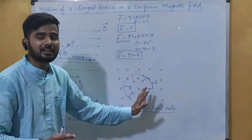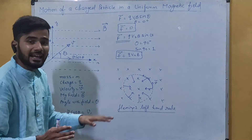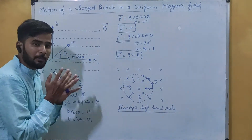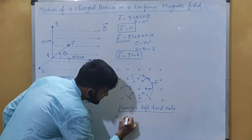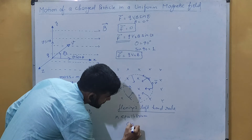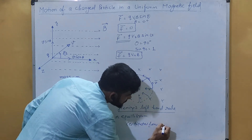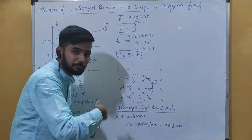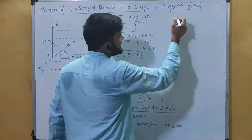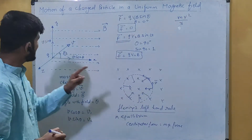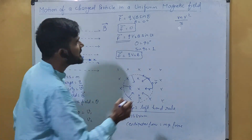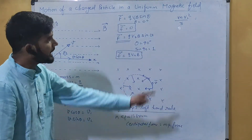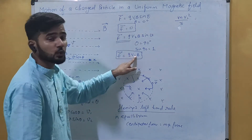A charged particle in a magnetic field executes a circular path. In equilibrium, the centripetal force equals the magnetic force: mv²/r = qv2·B. Here the velocity along the y-axis is v sin theta = v2. So we set mv2²/r = qv2·B. The v2 cancels on both sides, giving us v2 = bqr/m. This is the linear velocity with which the particle moves inside the magnetic field, where B is the field, q is the charge, r is the radius of the circle, and m is the mass.